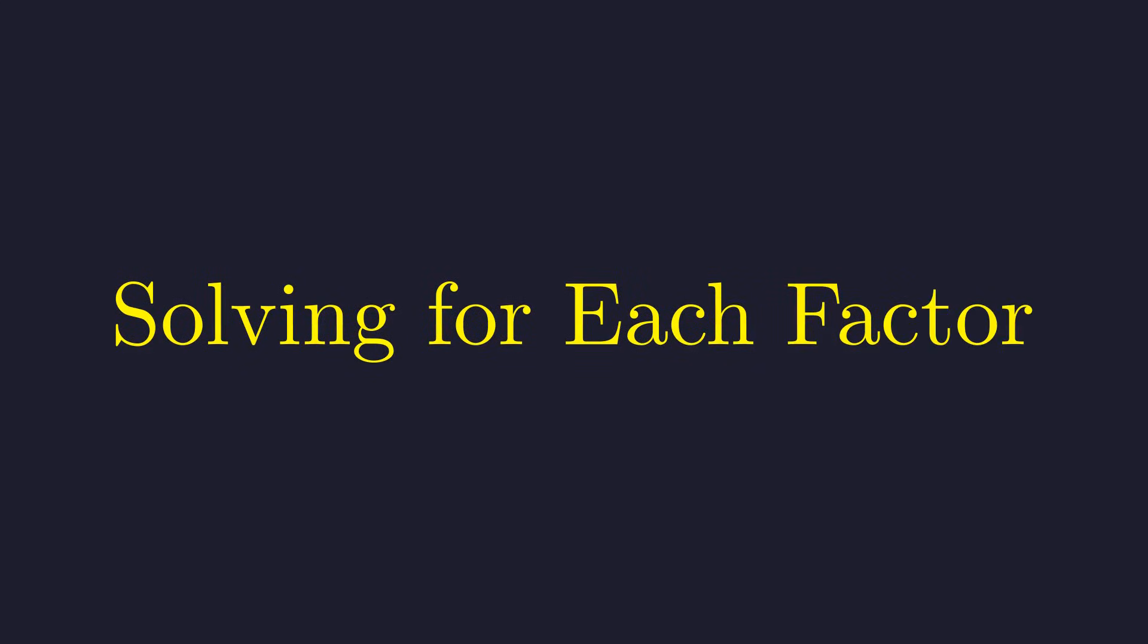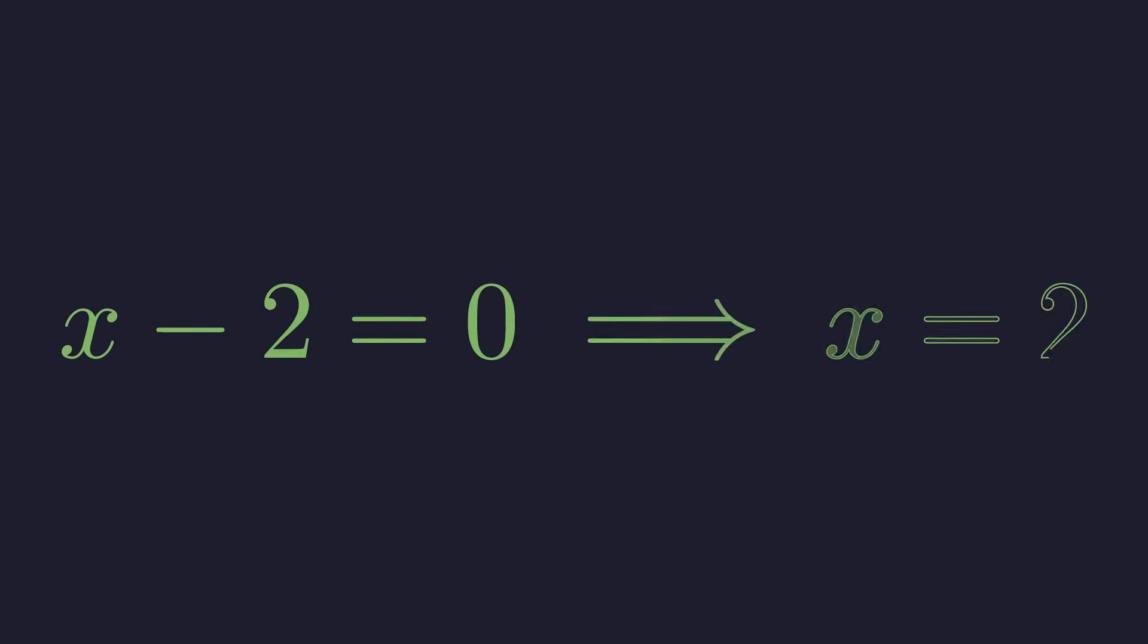Since the product of these two factors equals 0, at least one of them has to be 0. That's the key insight here. Setting the first factor to 0 gives us our real solution. x equals 2.